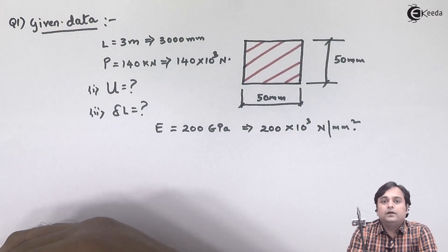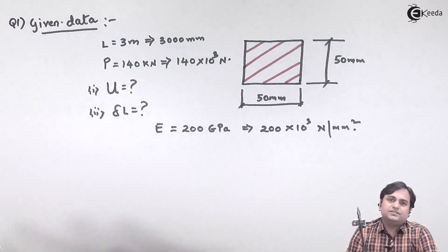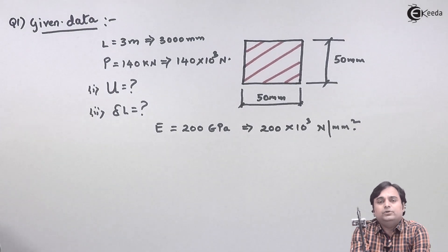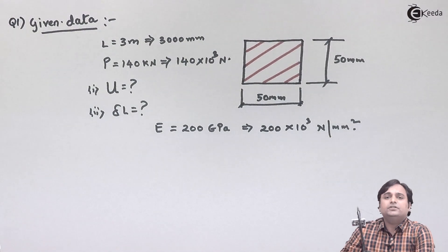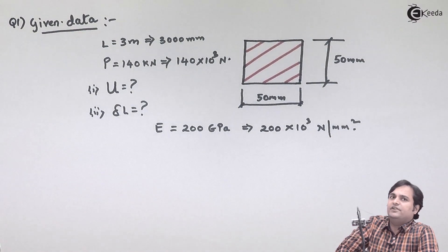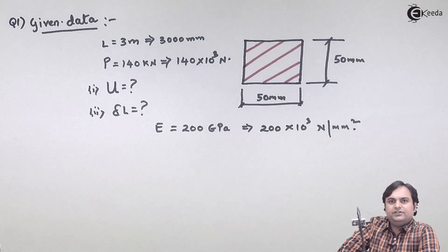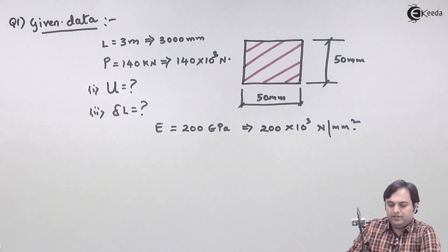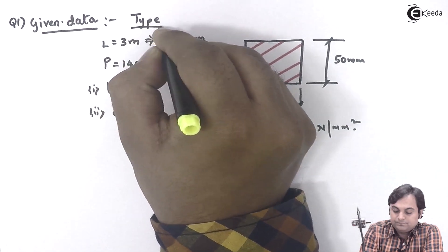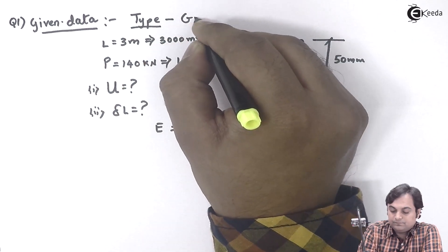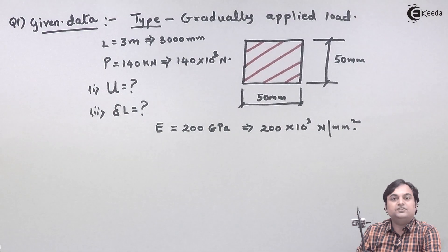Now, as we see in this problem, out of the three cases—that is, gradually applied load, suddenly applied load, and impact load—if we see in this problem here, the type of loading is not specified. So whenever they don't specify the type of loading, we have to consider it as gradually applied load.